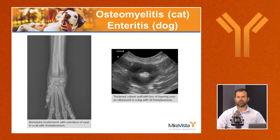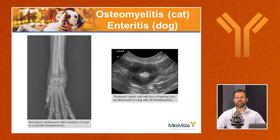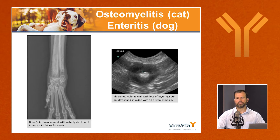Bone and joint involvement is relatively common in cats. The carpi and tarsi are most commonly infected, with a predominance of lysis visible in the distal radius, ulna, and carpal bones, along with joint effusion, draining lesions, and soft tissue swelling. In dogs, GI histoplasmosis almost always involves the large bowel, particularly the distal descending colon. On ultrasound, the colon wall appears thickened with loss of layering and hypoechoic — similar in appearance to infiltrative diseases like intestinal neoplasia or lymphoma.